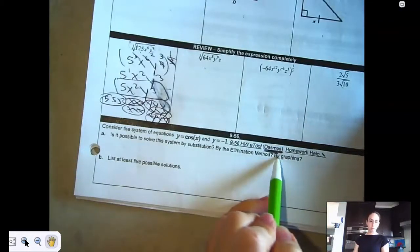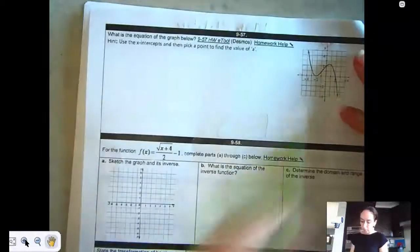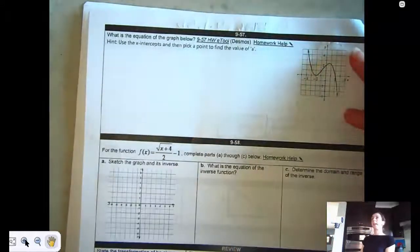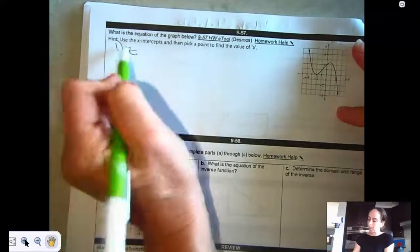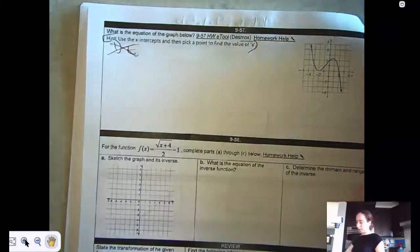This one, use Desmos to get the answer. This one, they want you to create an equation. So remember we did that in Chapter 8. You find the zeros. I put the hint right there. And then pick a point and plug it in. I'll highlight it to remind you about the hint.